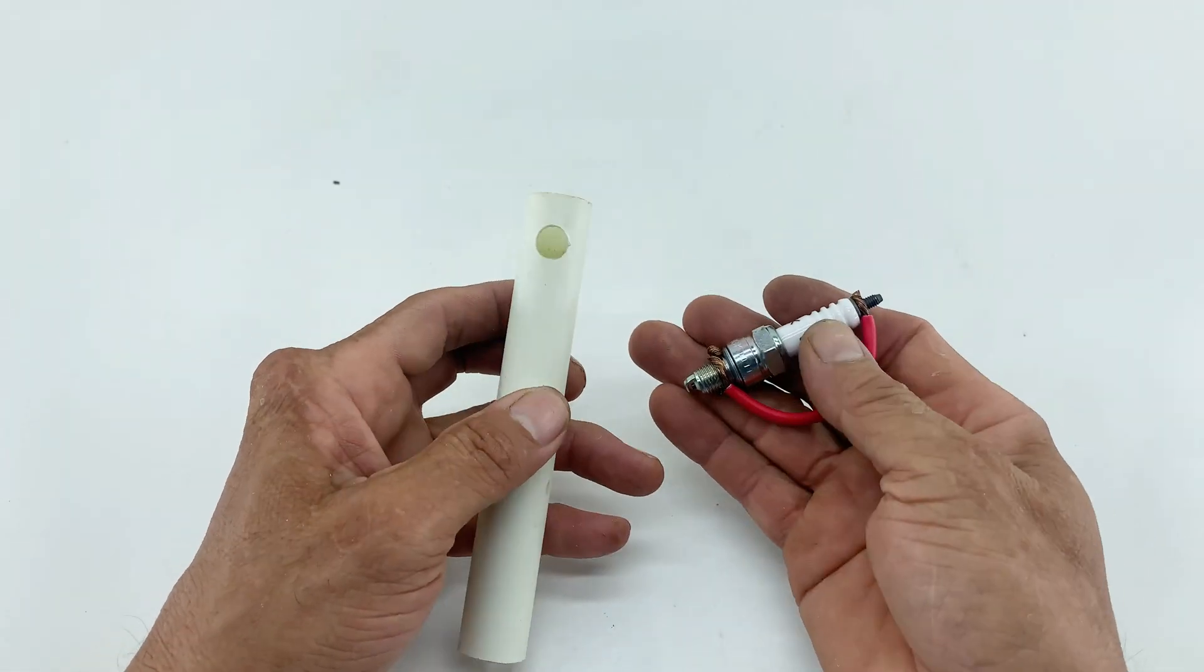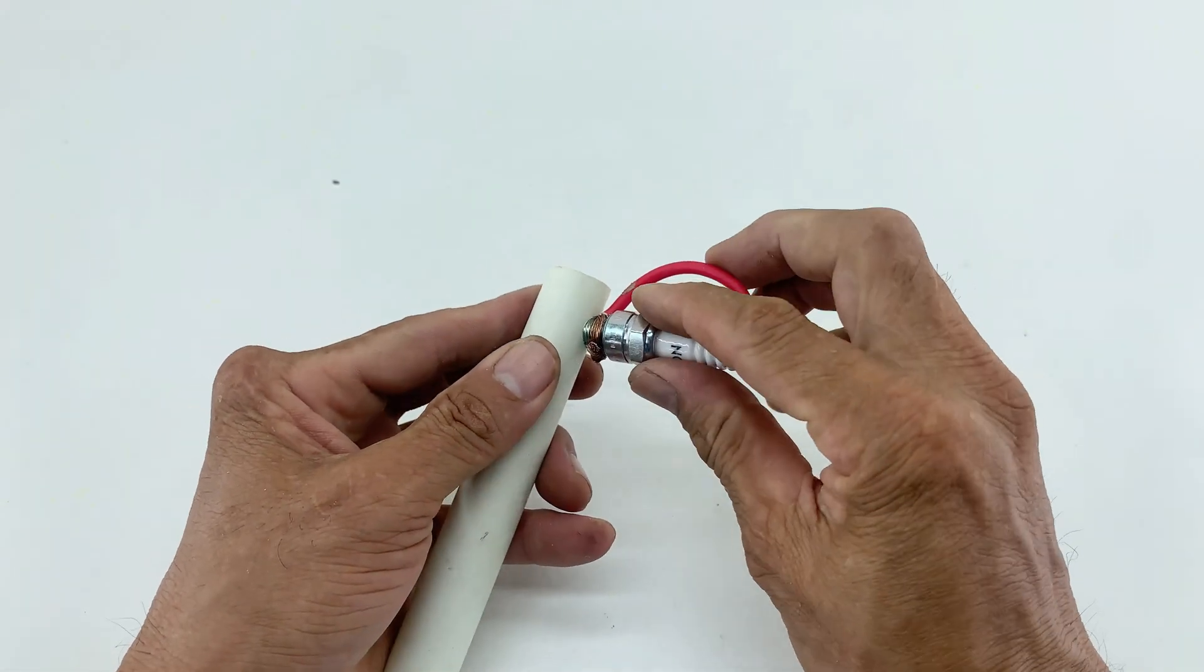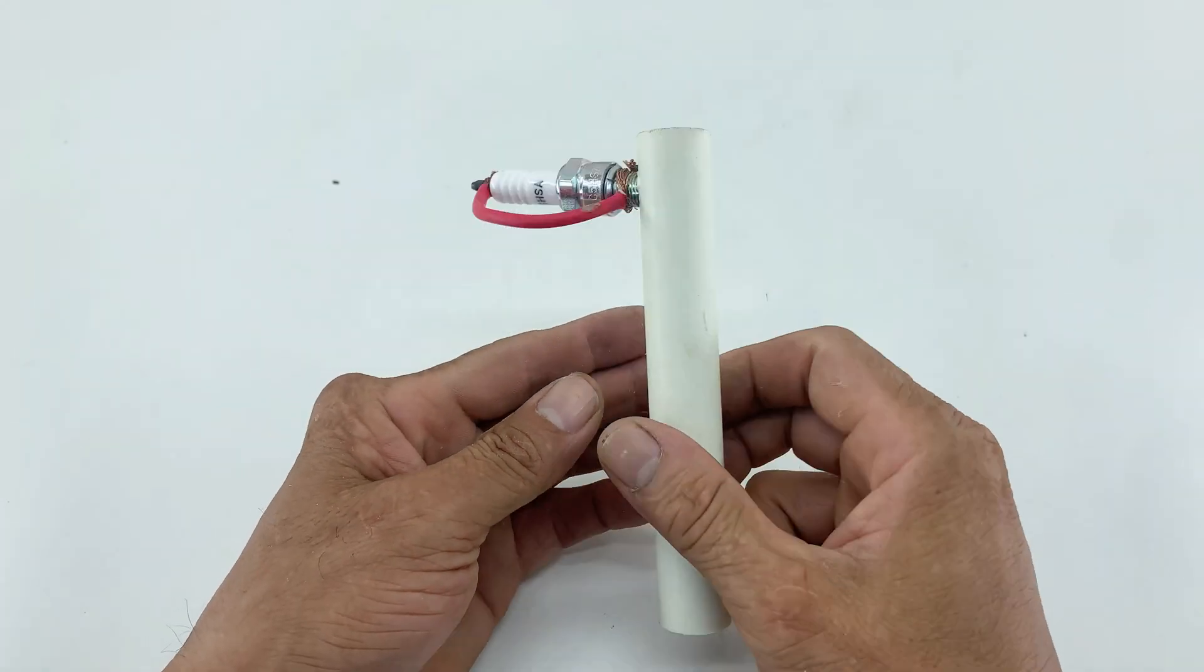I'm inserting the spark plug into the pre-drilled hole in the PVC pipe. It's crucial that it fits tightly to prevent any wobbling.